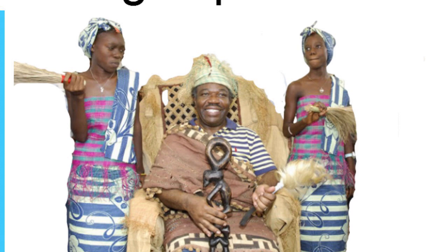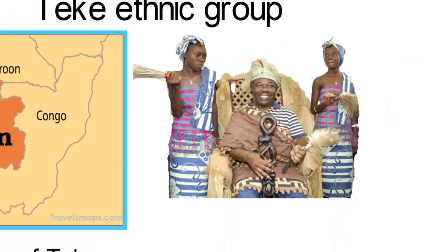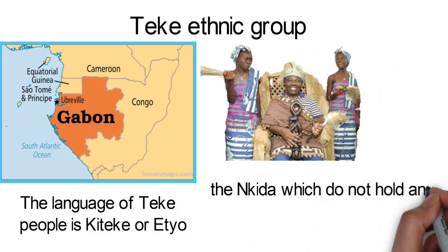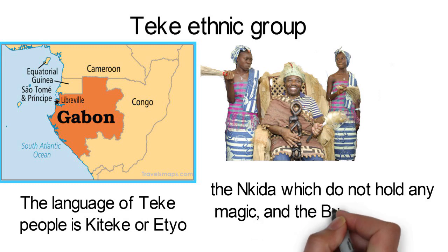The Teke are known for their arts. Teke statues have a religious function but are also used for magic. They mainly have two types of statues: the Nkida which do not hold any magic and the Buti which does.